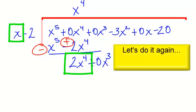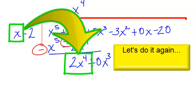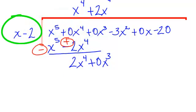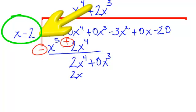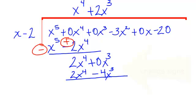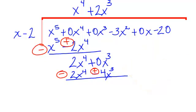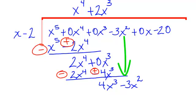Let's do it again. x will go into 2x to the 4th — that is a positive 2x to the 3rd. 2x to the 3rd times x is 2x to the 4th, and 2x to the 3rd times negative 2 is negative 4x to the 3rd. Subtract, which means I'm going to change my signs. I like to circle my new signs so I know which one to look at. 2x to the 4th and negative 2x to the 4th cancel. 0x to the 3rd and positive 4x to the 3rd will just be 4x to the 3rd. Bring down your next term.